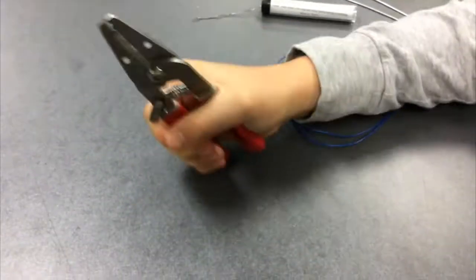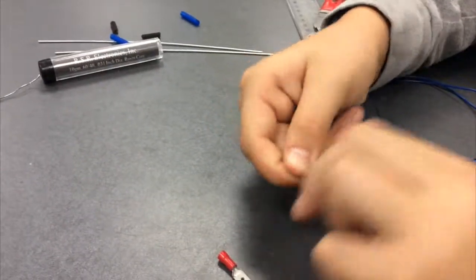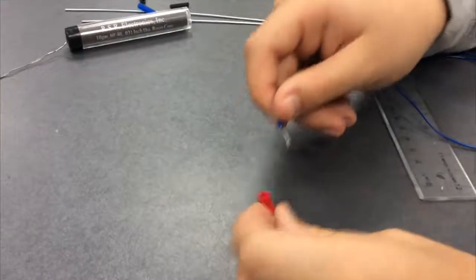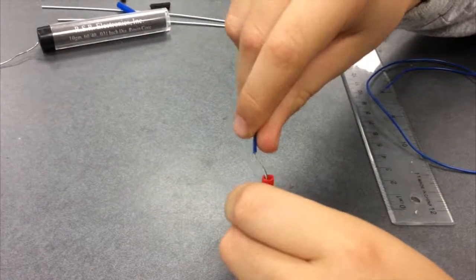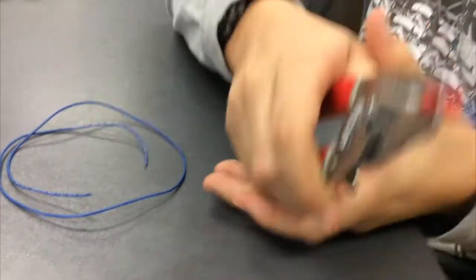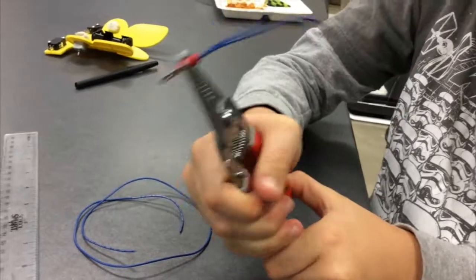Remove the insulation from the ends of your wires using the wire stripper. Twist the ends of the wires so they can fit inside the end of the spade connector. Use pliers to crimp the end of the spade connector to hold the wires inside.